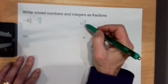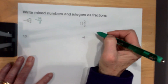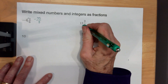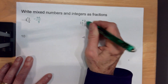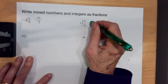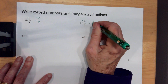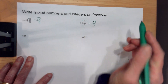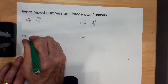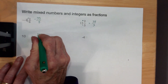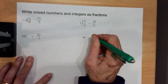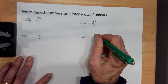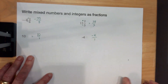Over here I have 12 times 3, then I'm going to add the 2. So this is 36 plus 2 more, which is 38 over 3. Now if I have whole numbers and want to make them into a fraction, I just place them over 1. So that's 10 over 1, and this would be negative 4 over 1.